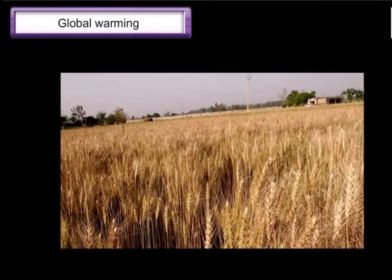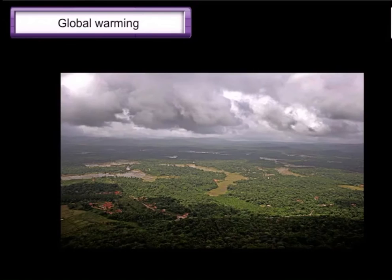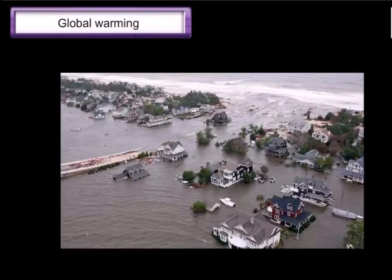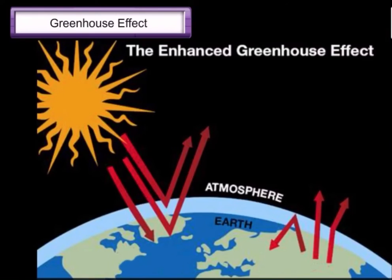Global warming causes changes in the pattern of crop cultivation and adversely affects the monsoon rains. It also causes excessive melting of polar ice, thereby raising the level of water in the seas and oceans. This may even cause flooding and submerging of many low-lying areas.